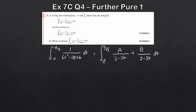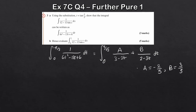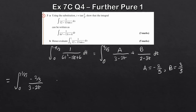Using partial fractions, we get A = -2/5 and B = 3/5. I'm assuming at Further Pure 1 level you're comfortable with partial fractions, but please let me know below if any issues. So A = -2/5 and B = 3/5. We now rewrite the integral from 0 to 1/√3 as (-2/5)/(3 - 2t) + (3/5)/(2 - 3t) dt.